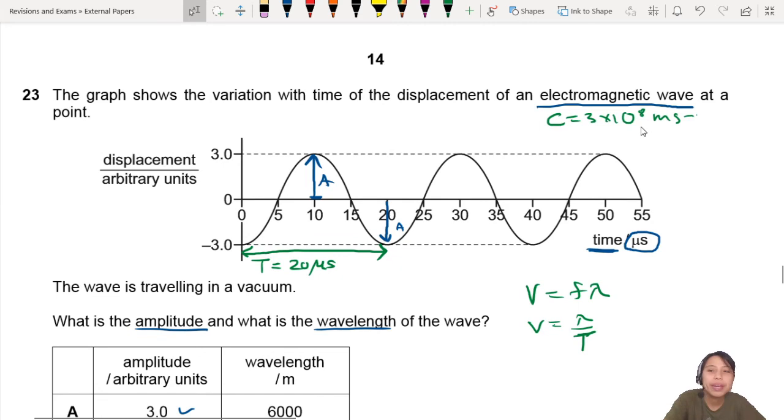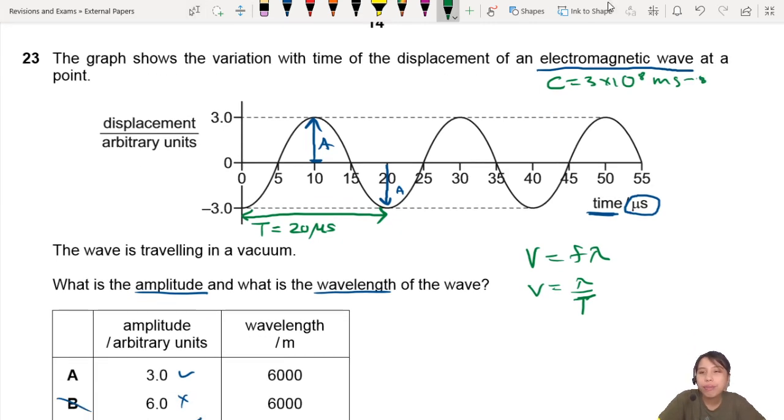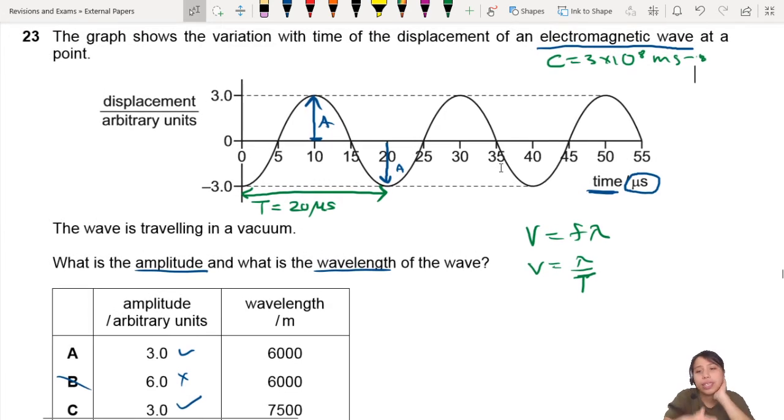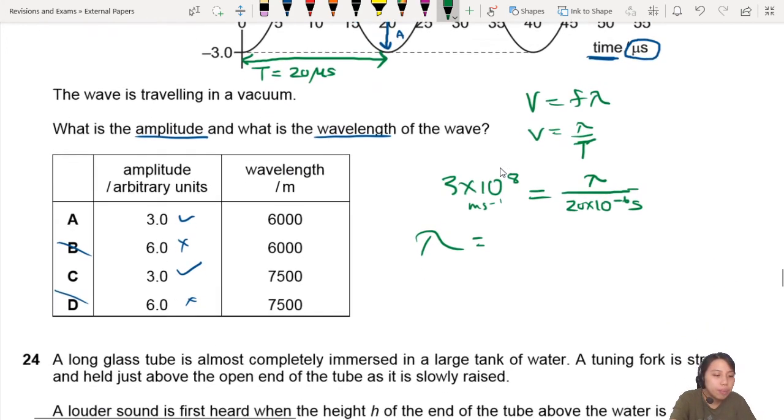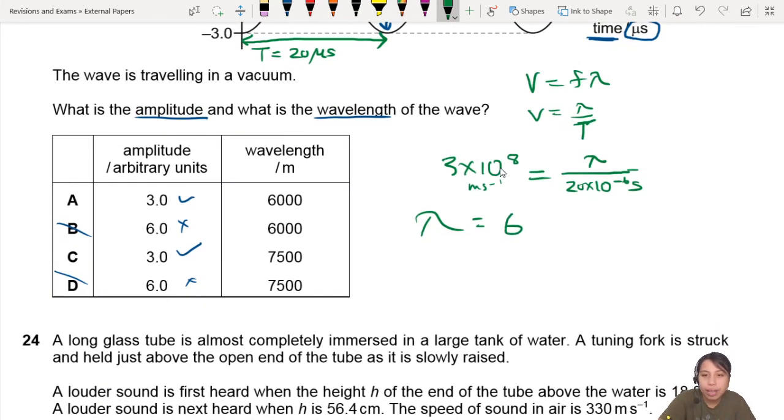That's the speed of light, by the way. You can find that value in your data formula sheet in the front of every exam paper or your calculator. So this will be 3 times 10 to the 8 equals to some wavelength divided by 20 microseconds. This is in meters per second. Let's double-check my SI units. Okay, everything looks good. So get a calculator, press some calculations. You should get a very long wavelength: 6,000 meters.